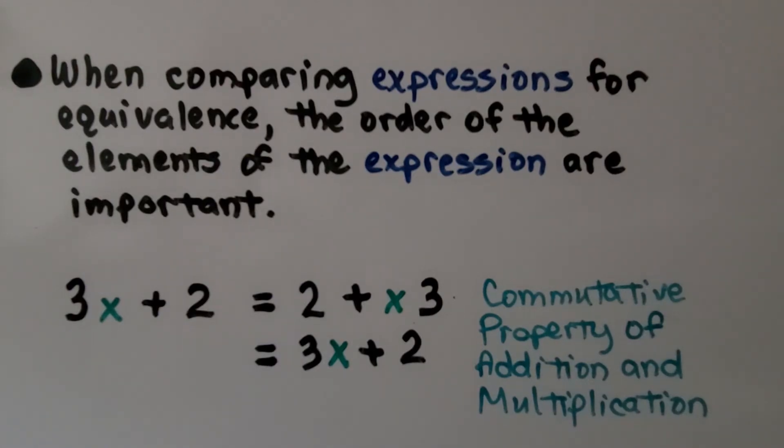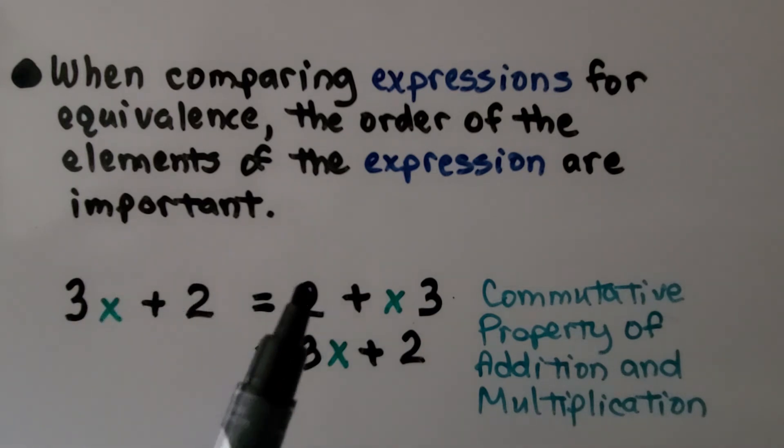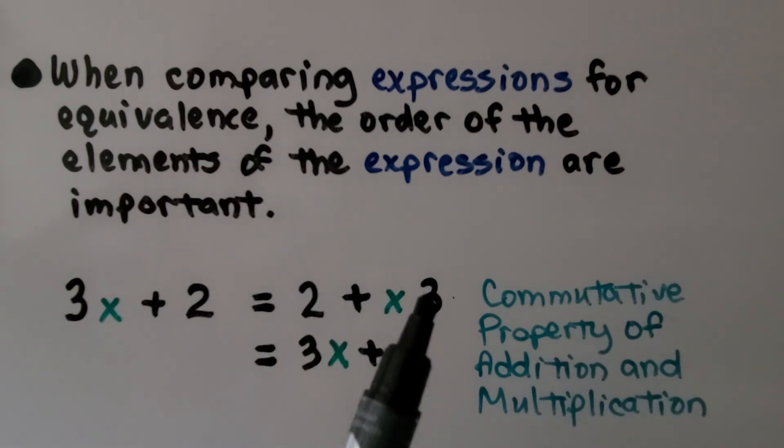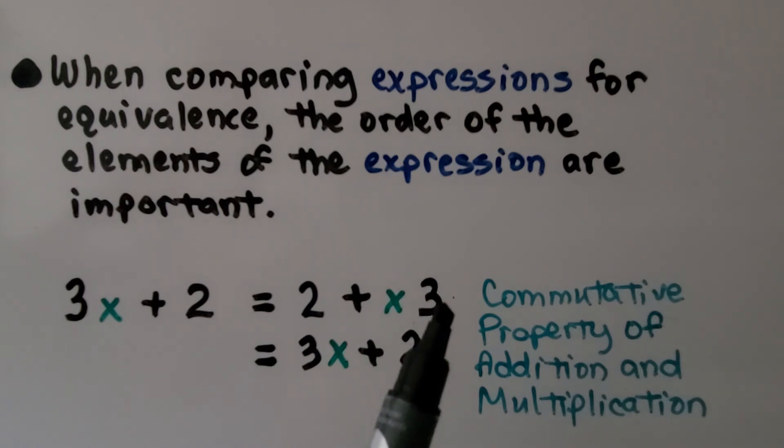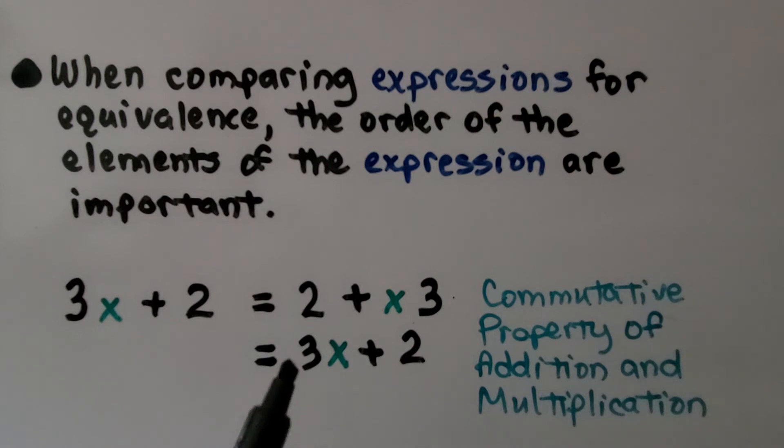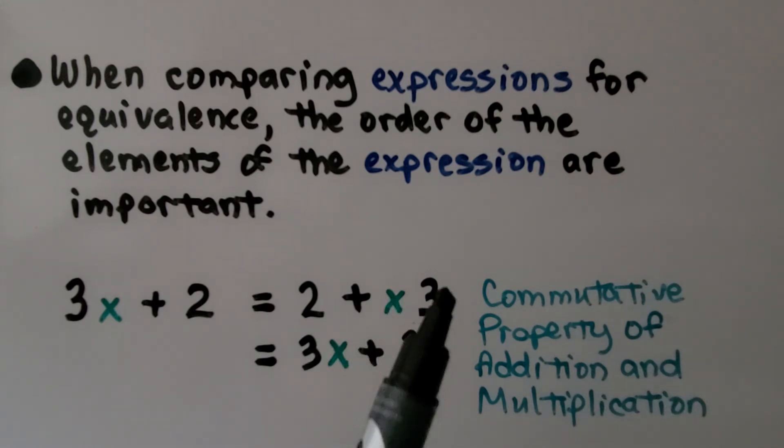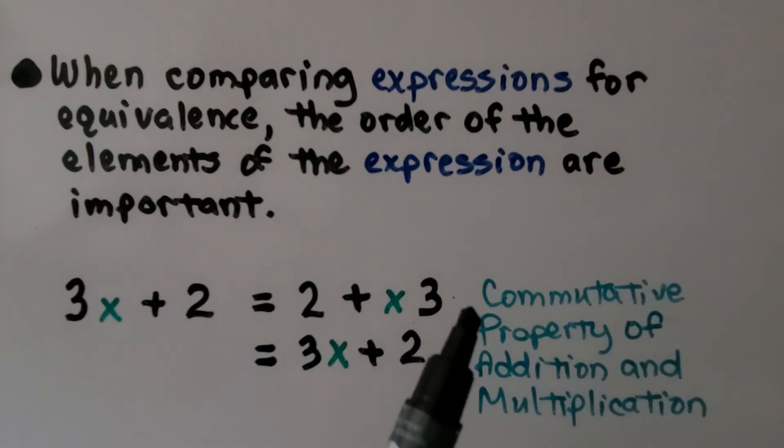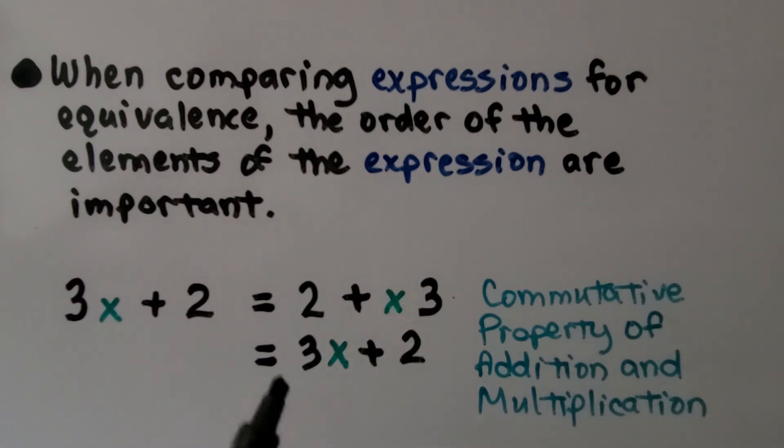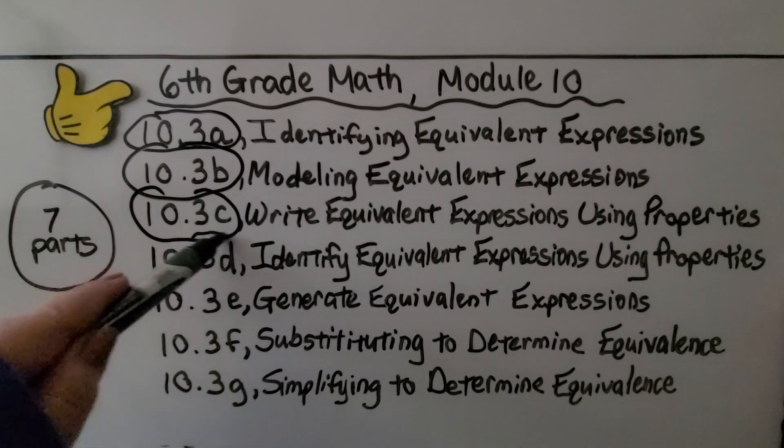When comparing expressions for equivalence, the order of the elements of the expression are important. We have 3x plus 2, and here we have 2 plus x3. We need to write this with the 3 coefficient in the front and the variable on the other side, on the right side, like this. So, because we can multiply in any order because of the commutative property of multiplication, we can flip this around to be 3x, and we can change the order and put the 2 back here because of the commutative property of addition. Okay, we're finished with D. We're going to move on to E, generate equivalent expressions.